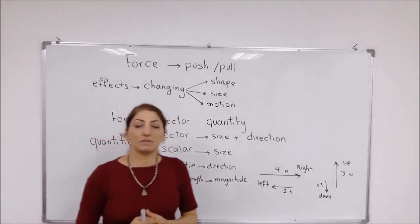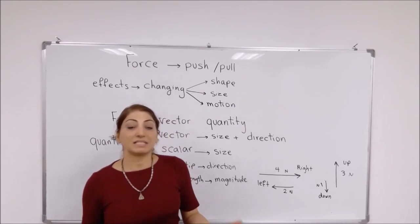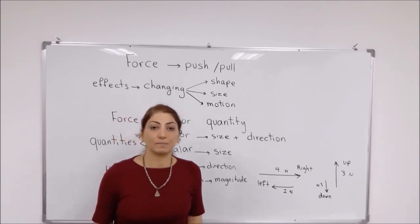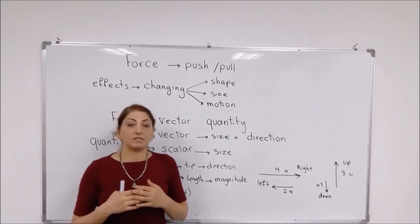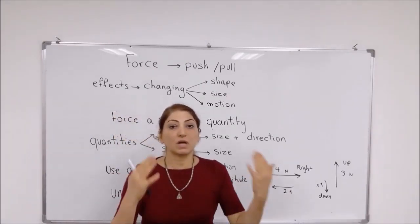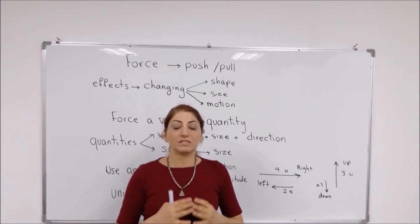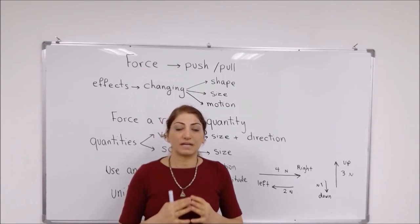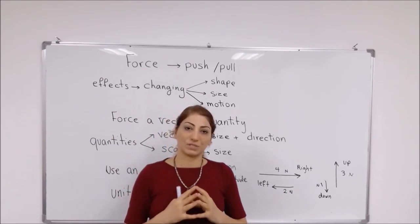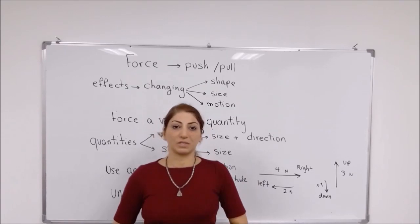An object, if it is moving, maybe it goes faster or it slows down. Or maybe if it is moving, it stops moving. So these are the effects of the force on the objects — on the shape, on the size, or on the motion of the object.